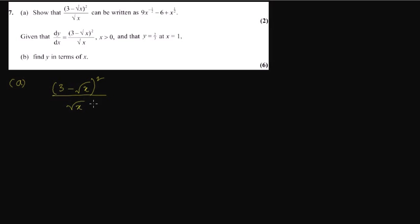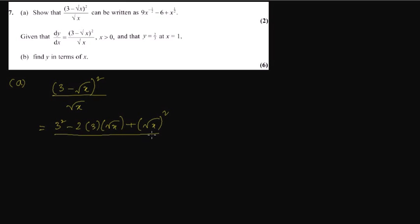This is (3 minus square root of x) whole squared, divided by square root of x. This is in the part of SIRD — SIRD means any question dealing with square root. So let's break this down. a minus b whole squared is a squared minus 2ab plus b squared, and we have divided by square root of x.